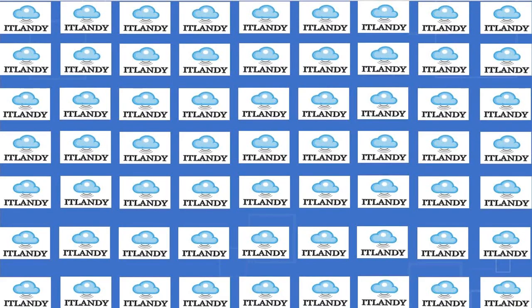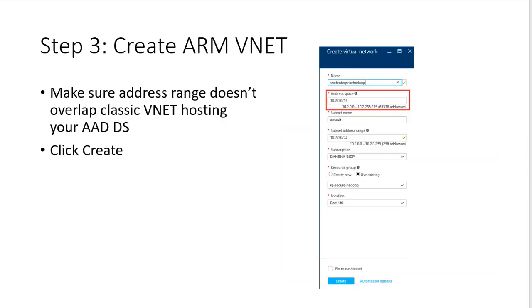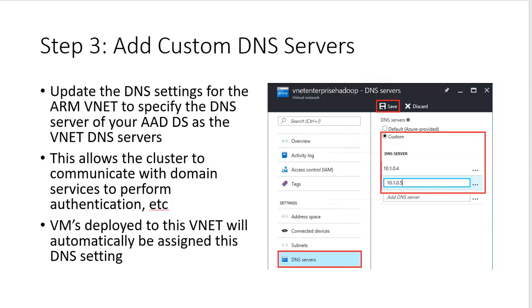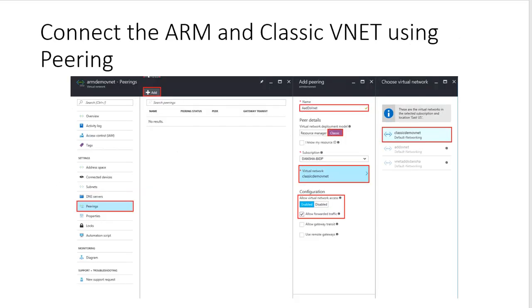Welcome back to session 5. We spoke earlier about DNS and the VNet — we said we need an ARM to create a VNet, and then after creating the ARM VNet, we need to connect it via peering, and then we did the DNS. We went through the DNS settings, and then for this connection, we said there are two methods for connection.